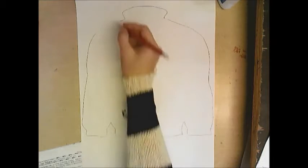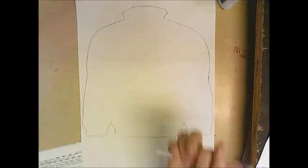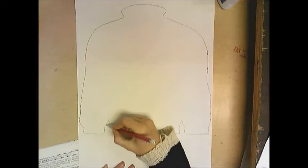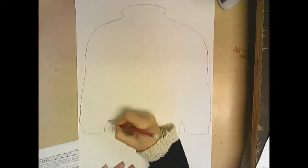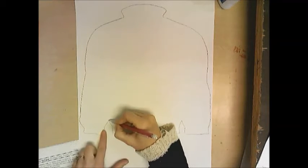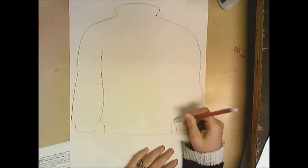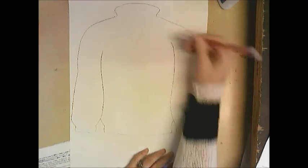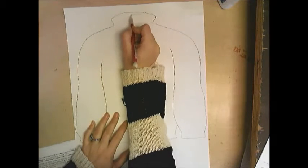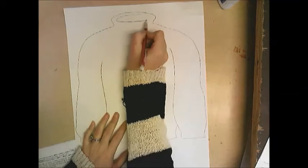Now from here we have a few little lines that we need to create. Right here, this is where the sleeve's gonna go, so I want you to right here where it meets, kind of just draw a wavy line, go up like that. Do the same thing over here, so now we have arms.